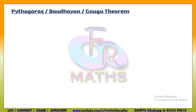Hello everyone, welcome to the channel. In this video, we are going to discuss the proof of the famous theorem, Pythagoras theorem. It is also called the Bauddayan theorem, named after an Indian mathematician, and the Gogu theorem, named after a Chinese mathematician. All three theorems state the same thing, and we are going to discuss the statement, where this theorem is valid, and how it came into existence.